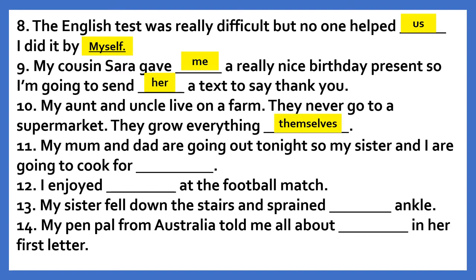Eleventh: My mum and dad are going out tonight, so my sister and I are going to cook for dash. Answer: ourselves. Twelfth: I enjoyed dash at the football match. Answer: myself. Thirteenth: My sister fell down the stairs and sprained dash ankle. Answer: her. Fourteenth: My pen pal from Australia told me all about dash in her first letter. Answer: herself.